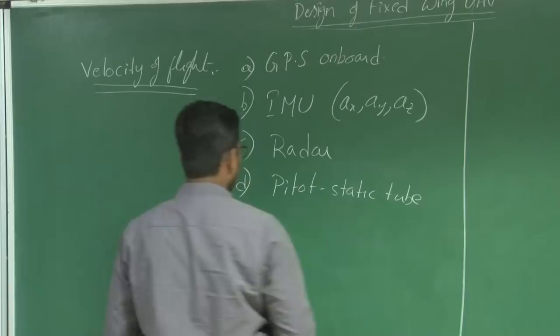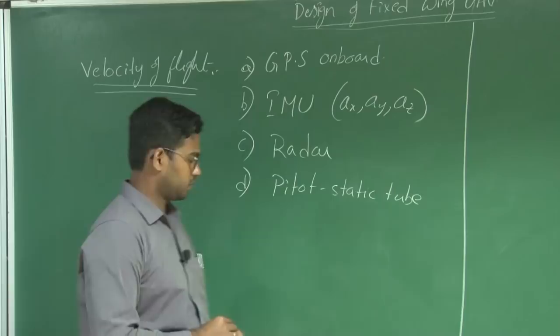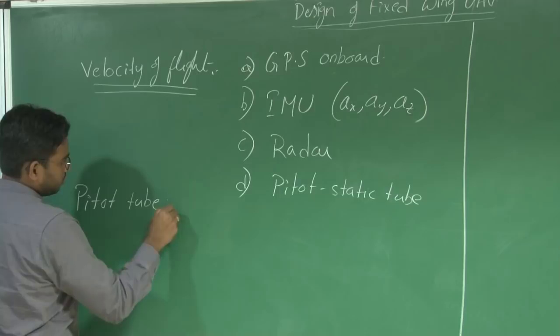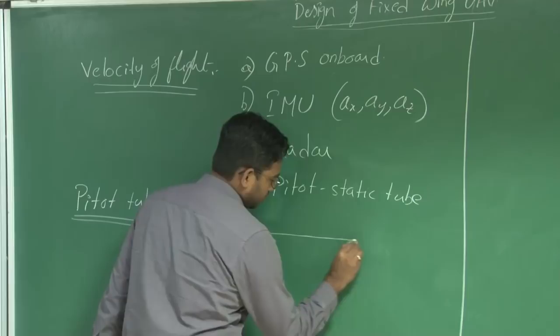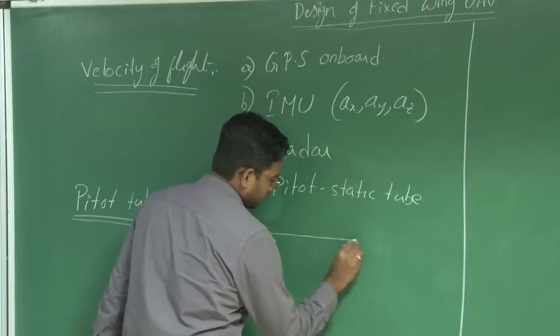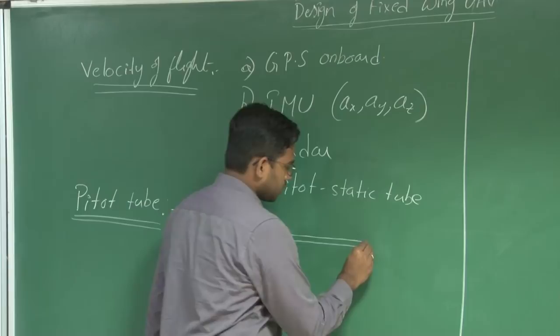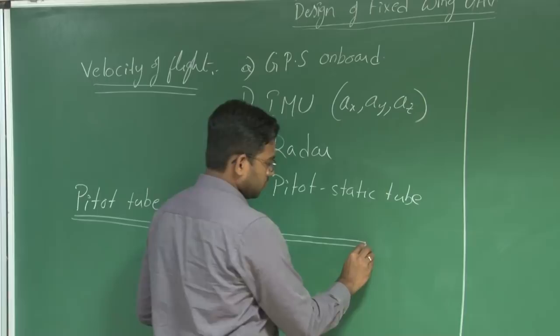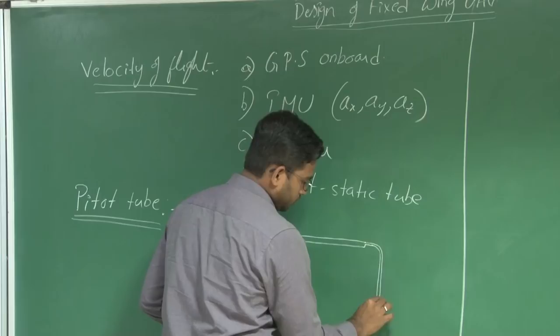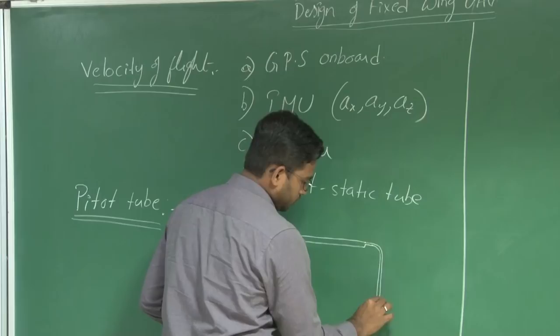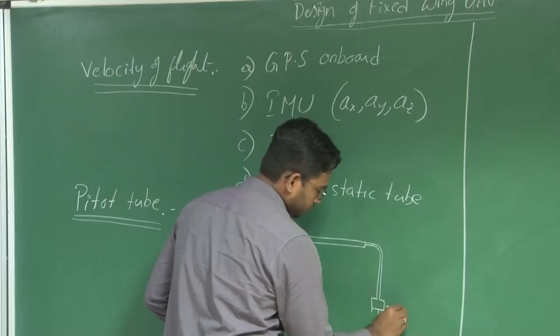In the first place, what is this pitot tube and static tube? Consider a hollow cylindrical tube with an open mouth at one end and a closed mouth at the other end. Drill a small hole here to tap the pressure reading and connect this to a pressure sensor.